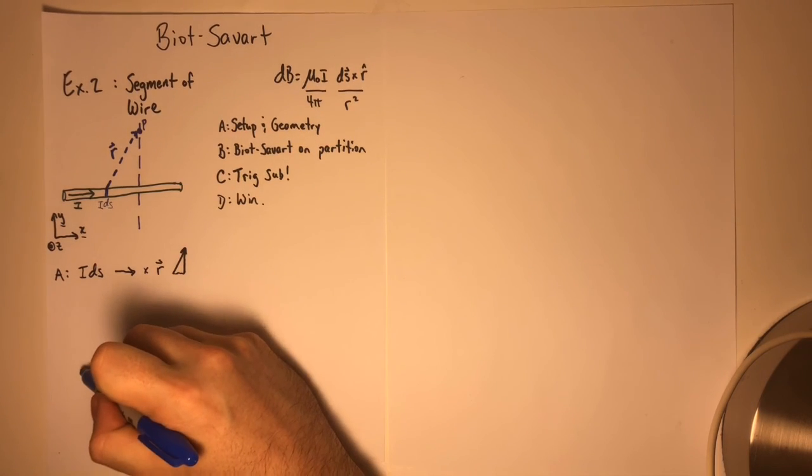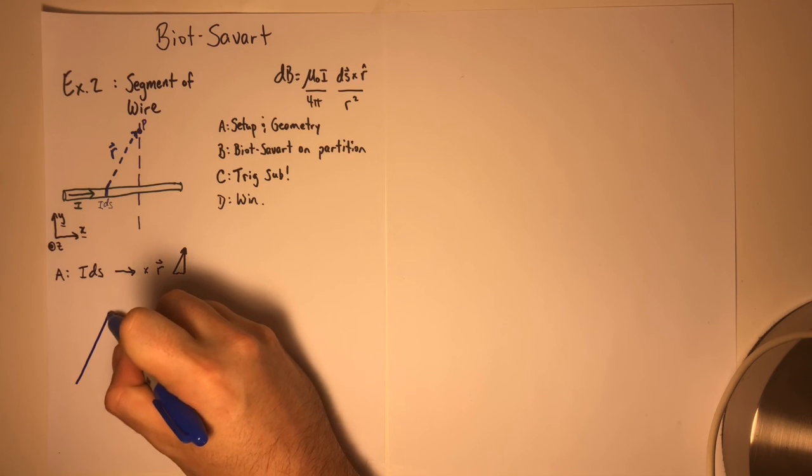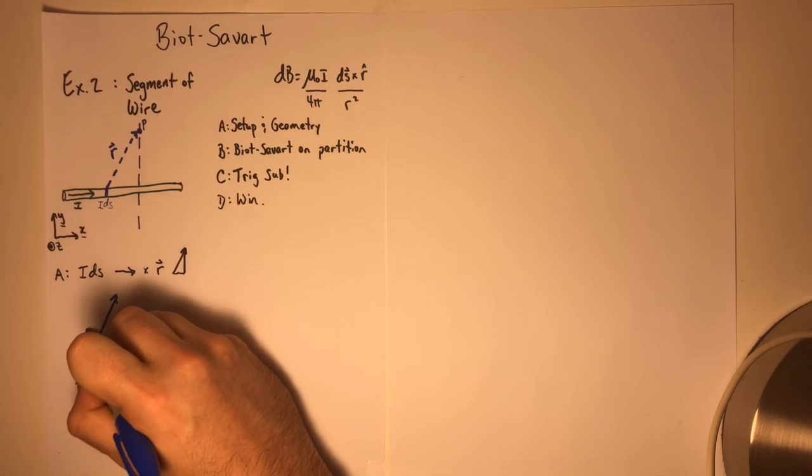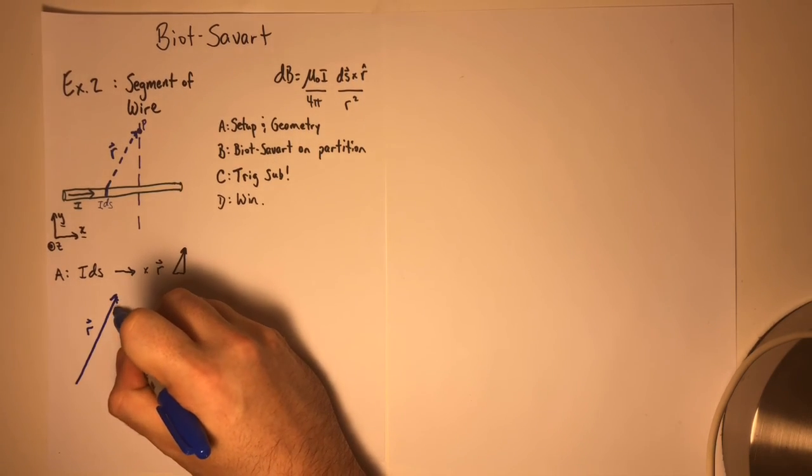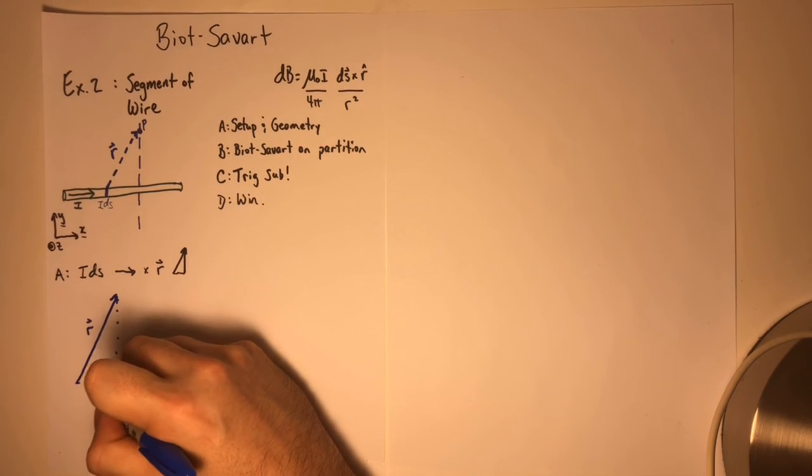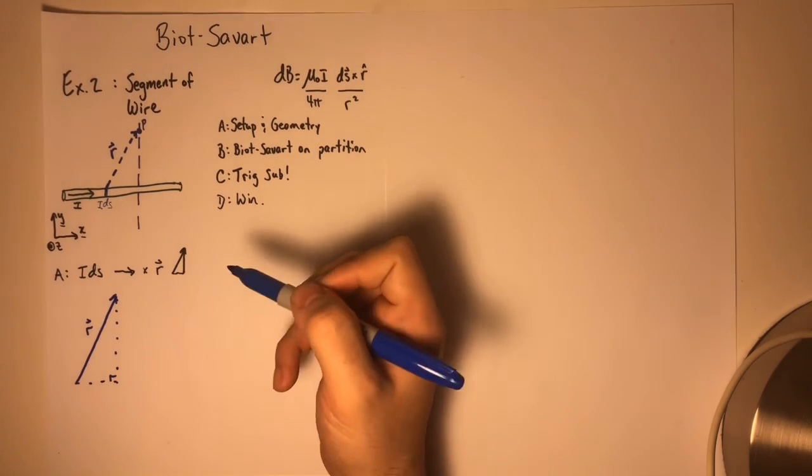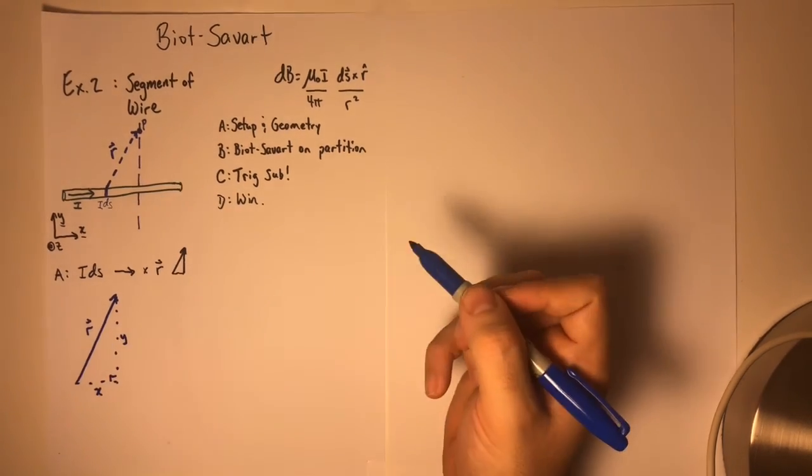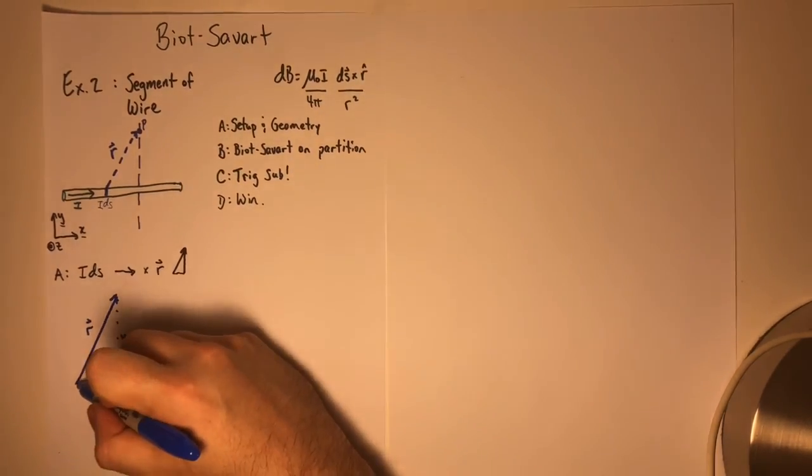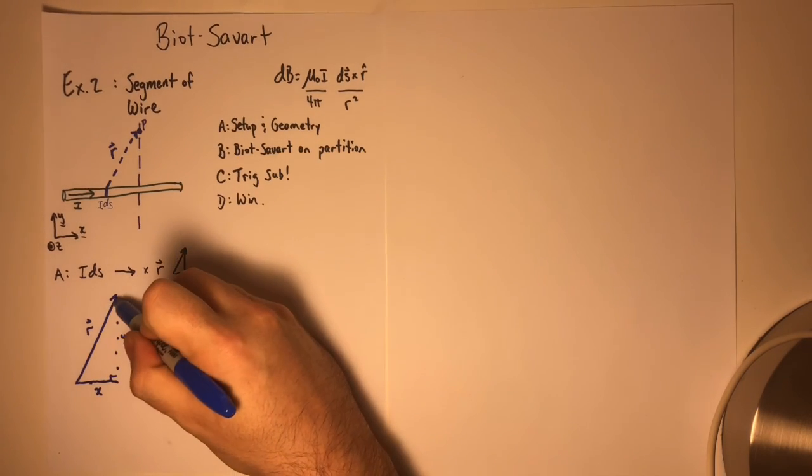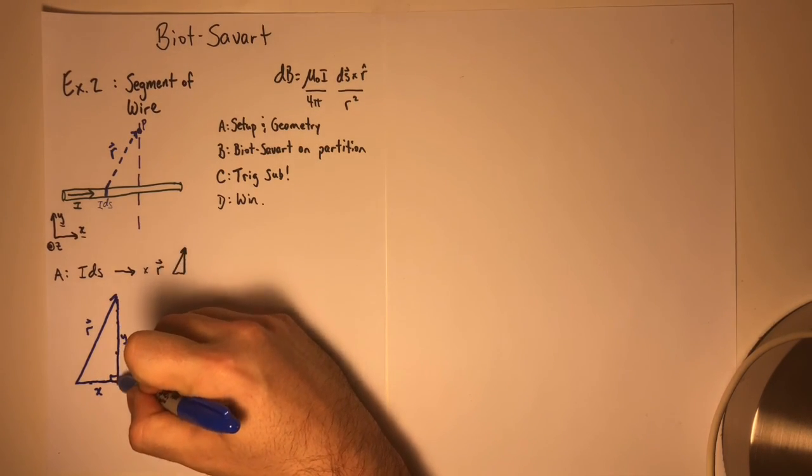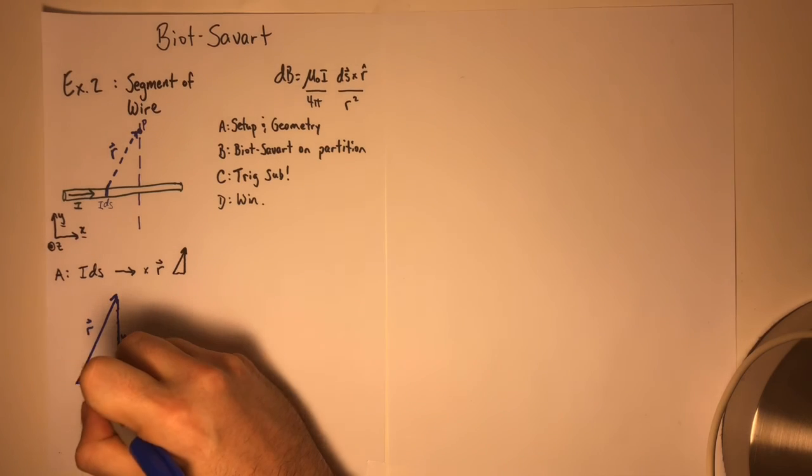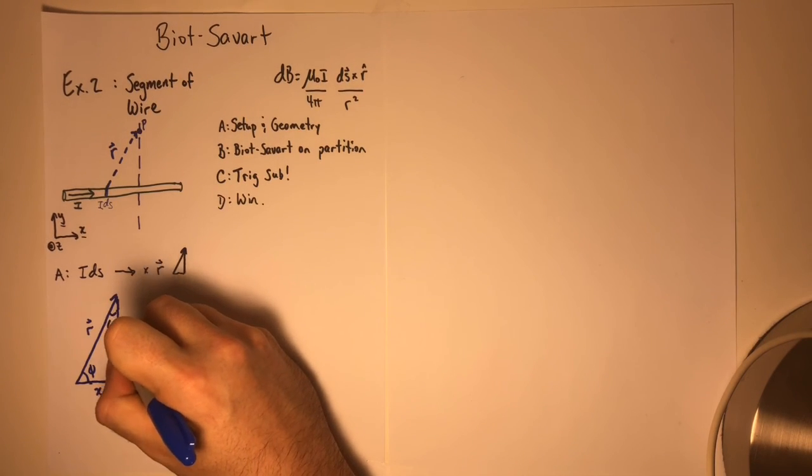So we have our vector that points in this direction. We have a right triangle. We can call this Y, and we can call this X, both distances. We can call this angle phi. We can call this angle theta.